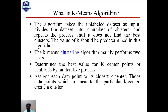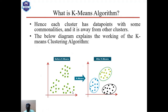The K-Means algorithm mainly performs two tasks: first, it determines the best value for K center points or centroids through an iterative process; second, it assigns each data point to its closest K center. Data points near a particular K center form a cluster. Each cluster has data points with some commonalities and is away from other clusters. The diagram below explains the working of K-Means clustering — before K-Means and after K-Means.